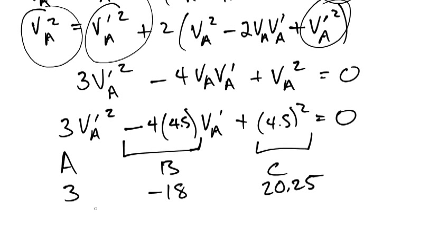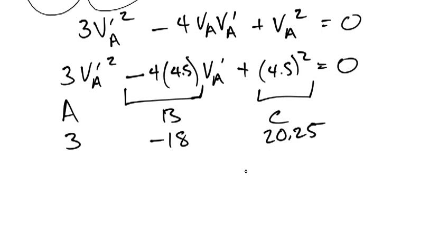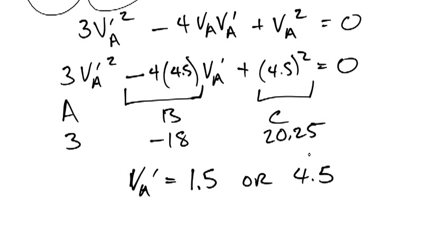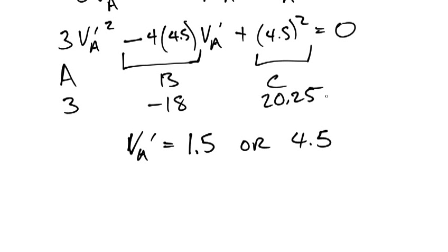Using a calculator to solve this quadratic — storing A=3, B=−18, C=20.25 — the two solutions for VA prime are 1.5 and 4.5, both positive. We're not quite finished though, because we still need to find VB prime.